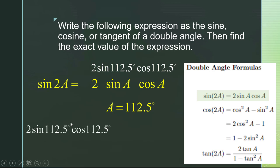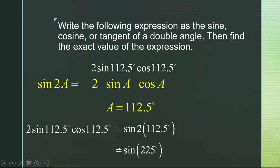We'll start with what they gave us: 2 sine of 112.5 degrees times cosine of 112.5 degrees. We've already identified that this fits sine(2a), so it's equal to sine of 2 times 112.5 degrees. We can simplify that: 2 times 112.5 degrees is 225 degrees, so we need to evaluate sine of 225 degrees.